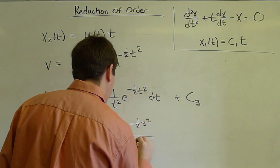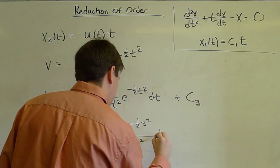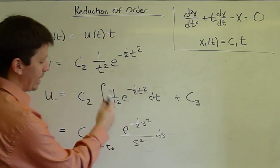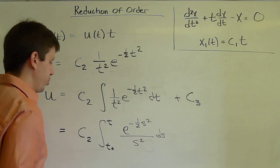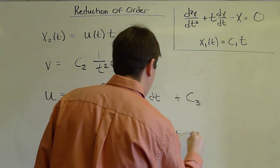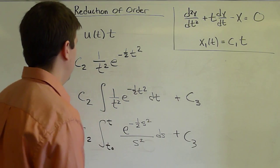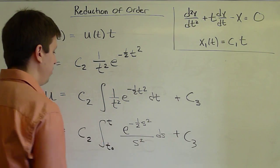So e^(-1/2 s²)/s² ds. It doesn't really matter what it is. It's just a dummy variable that must be different than t since t is now being used. Plus c3. Again, an unknown integration constant.